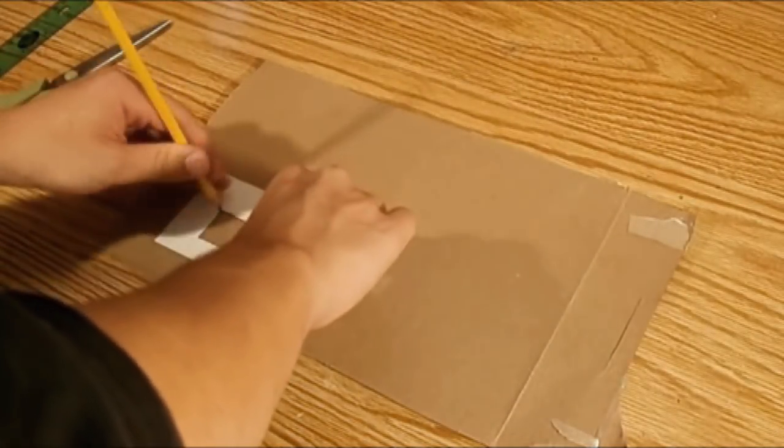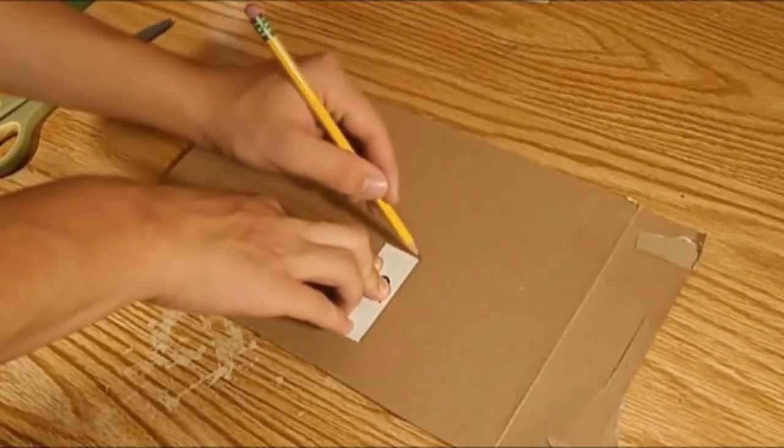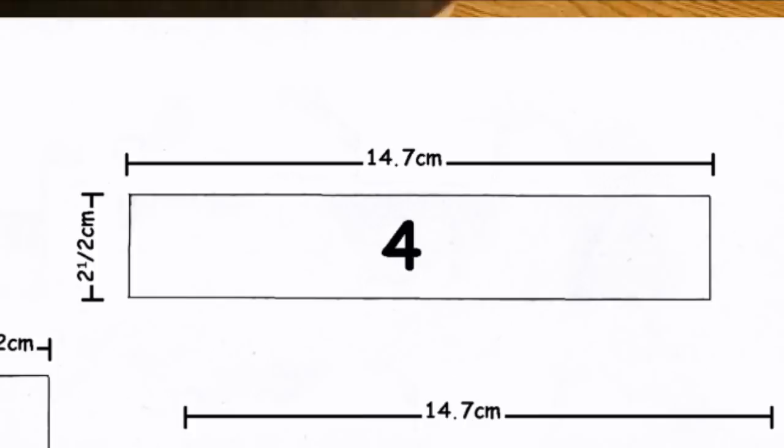So taking the templates, I traced every single one onto some cereal box cardboard. You're going to want to trace templates 3, 4, and 5 out twice.